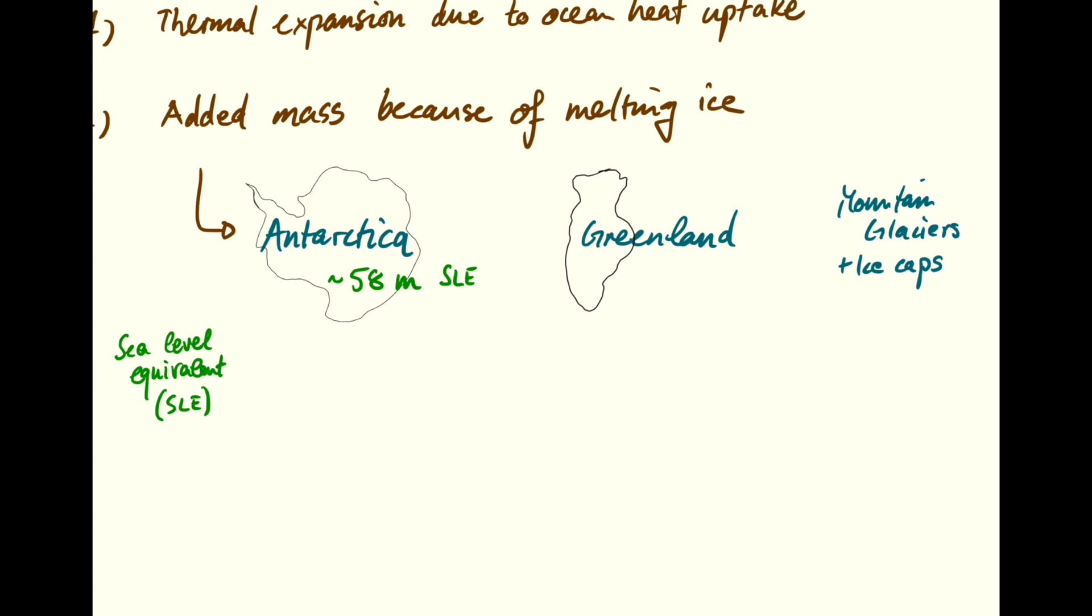For Greenland, we have about 7 meters sea level equivalent. And all the rest of the ice leaves us with about 0.3 meters sea level equivalent.